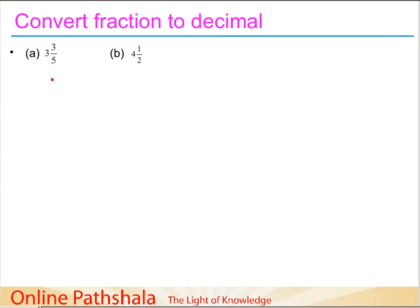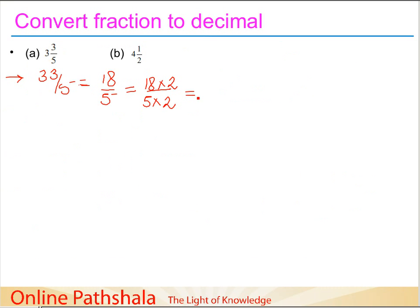The next example is the mixed fraction 3 and 3/5. Let me first convert it into an improper fraction. Five times three is fifteen, plus three is eighteen, giving eighteen-fifths. The rule is to convert to a denominator of ten, so I multiply and divide by two: the denominator five becomes ten, and eighteen becomes thirty-six. Since it's divided by ten I move one decimal place, giving 3.6.